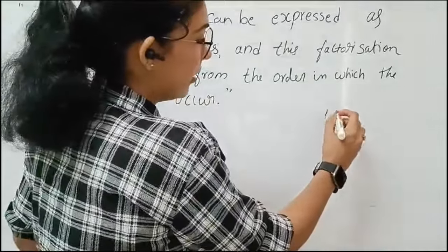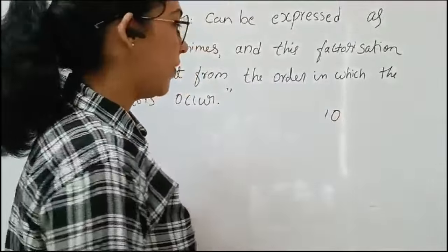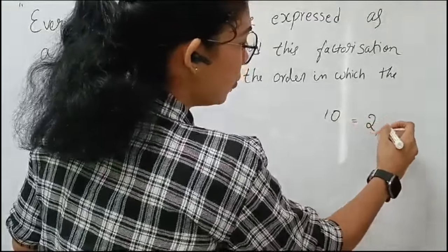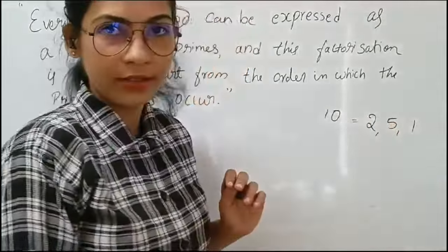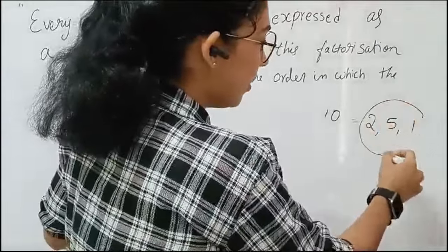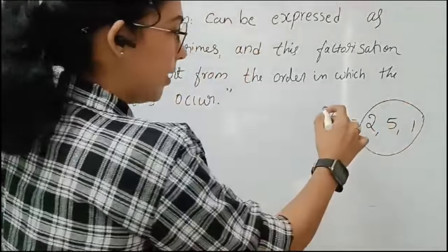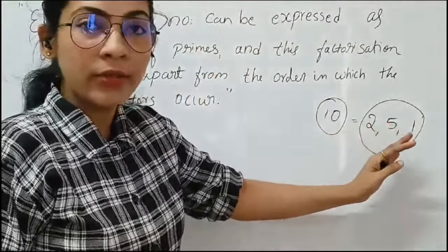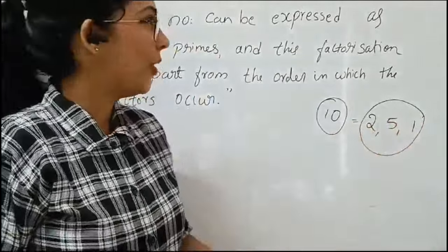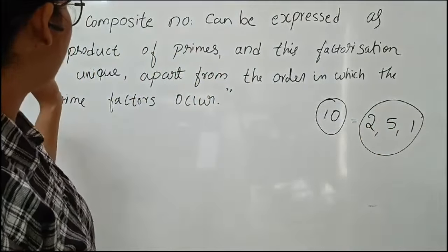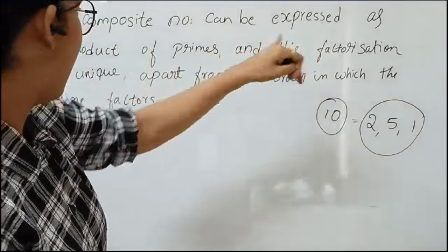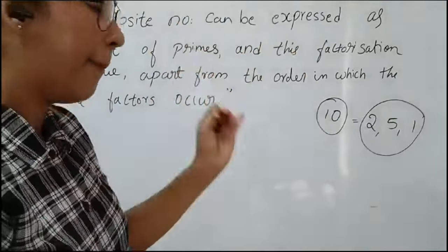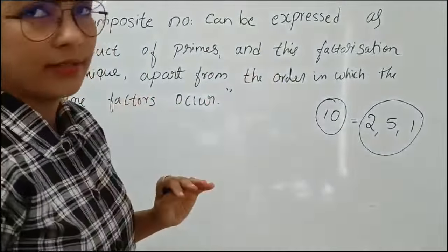For example, 10 is a composite number. What are the factors of 10? They are 2, 5, and 1. All these numbers are prime numbers. Since 10 is a composite number, its factors 2 and 5 are prime. So this theorem states that every composite number can be expressed as a product of primes, and this factorization is unique apart from the order in which the prime factors occur.